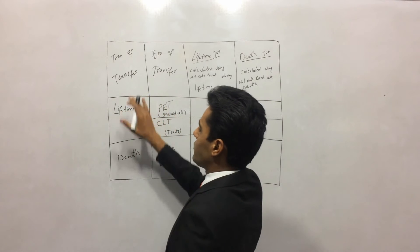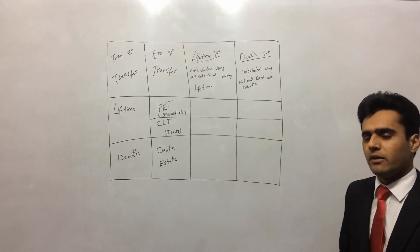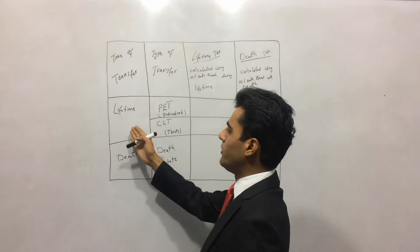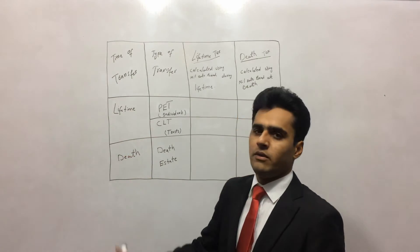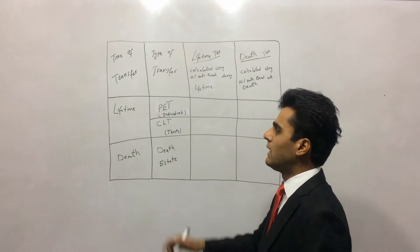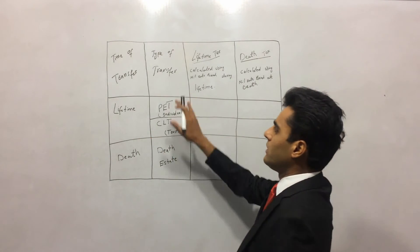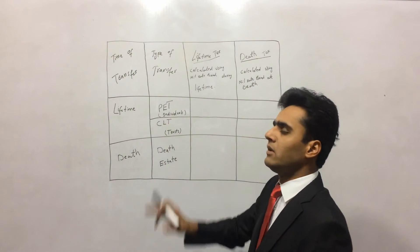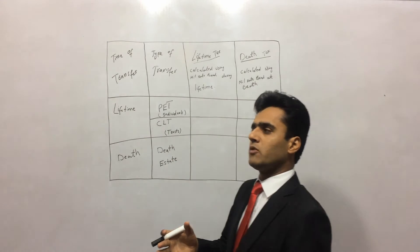As you can see, the table says 'time of transfer.' There are two types: you can either make the transfer during lifetime, or you can make it at death. Then it says 'types of transfer.' The transfers can be of two types: one could be to individuals and the other could be to a trust.